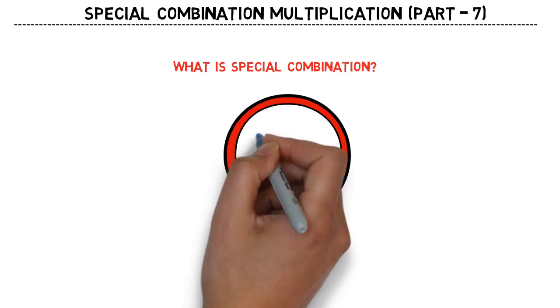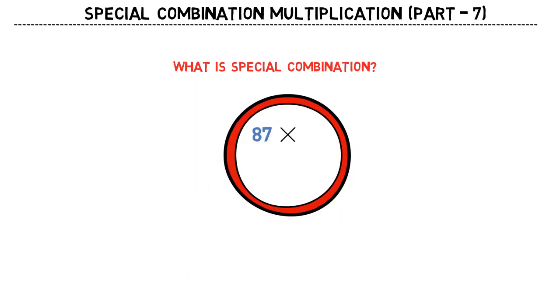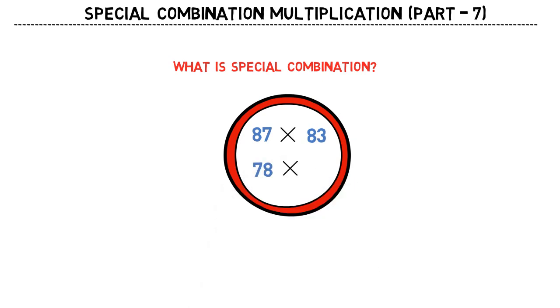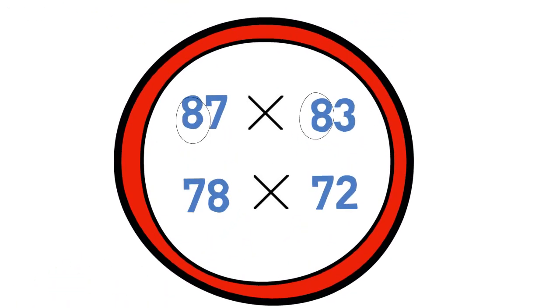87 into 83, 78 into 72. If you observe this, tens digits are same in both the multiplication, right? In the first one 8 and 8, in the second one 7 and 7. This is our first condition for this special combination.